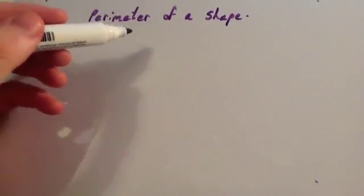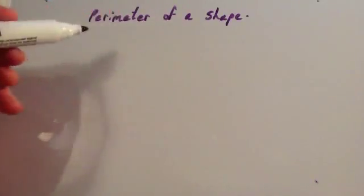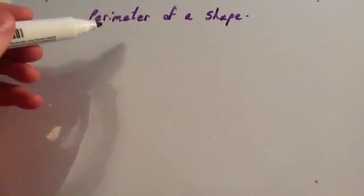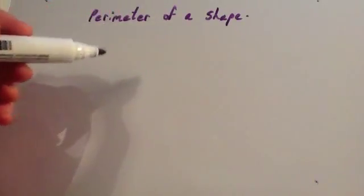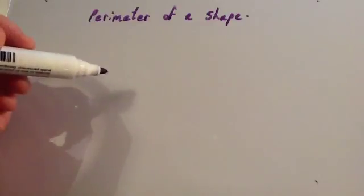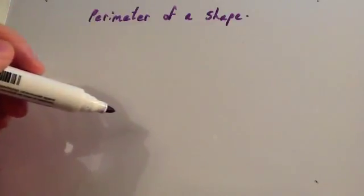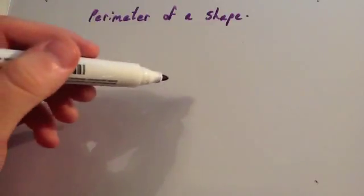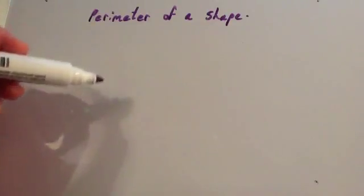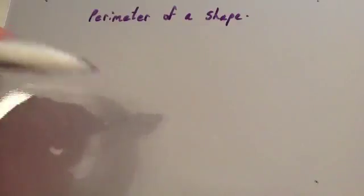We're now going to look at how to find the perimeter of a shape. To find the perimeter of a shape, what you do is you add together the lengths around the outside of the shape. So really, it's the distance around the outside of the shape.